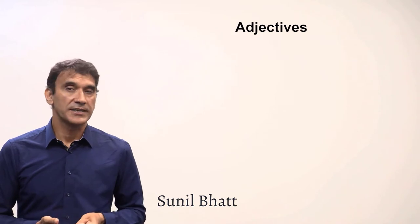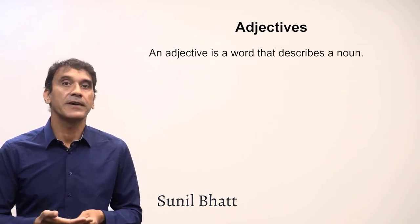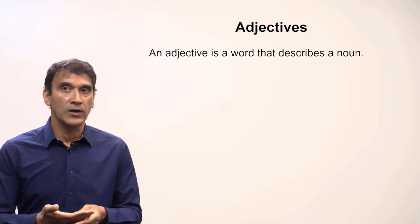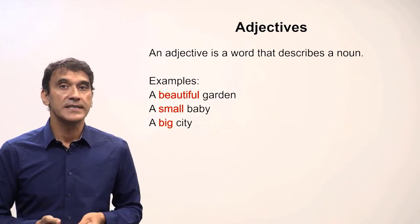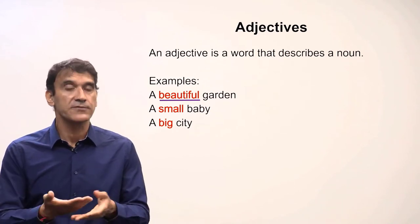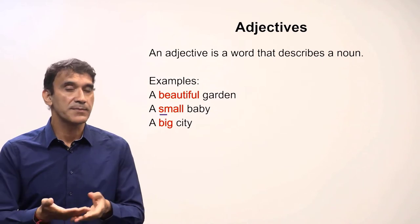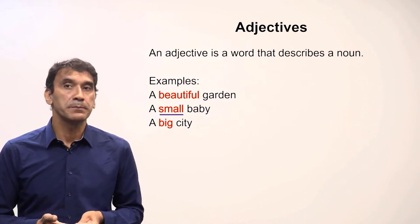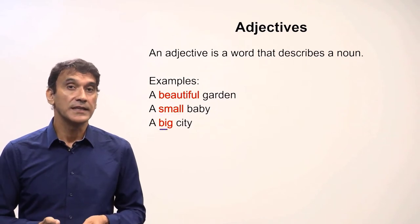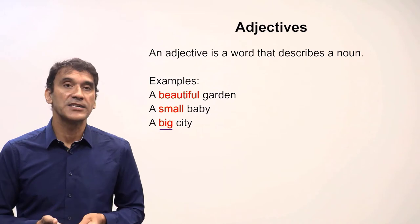Our next grammar point is adjectives. Before we take adjectives in Hindi, let's define what an adjective is. An adjective is a word that describes a noun. For example, in the phrase 'a beautiful garden,' the word 'beautiful' describes the garden — that's why 'beautiful' is an adjective. Similarly, 'a small baby' — the baby is described by the word 'small.' A big city — the word 'big' is describing the noun 'city,' so 'big' is an adjective.